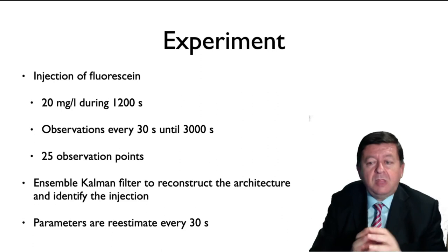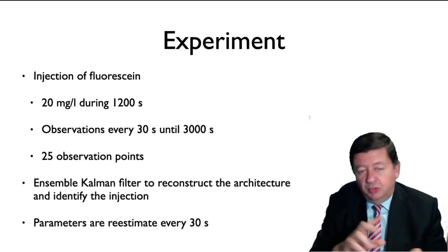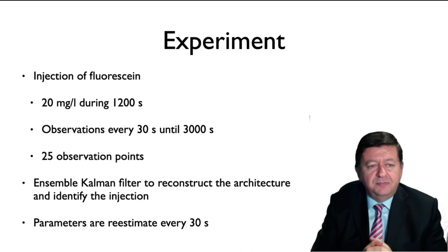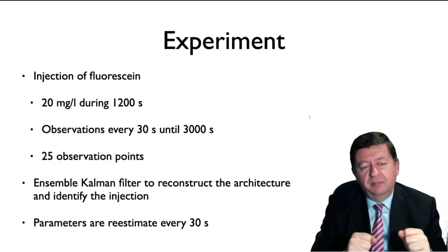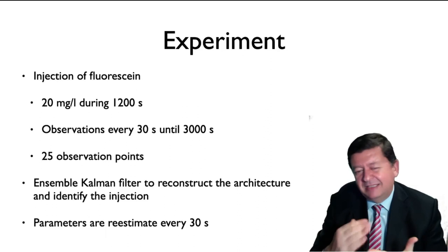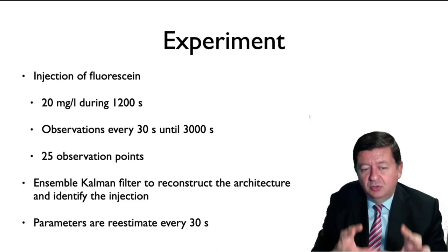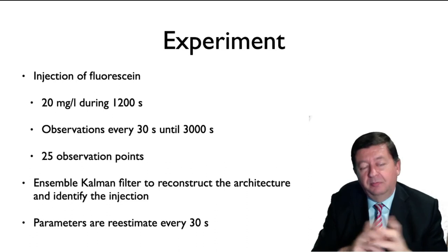The experiment involved injection of fluorescein at 20 milligrams per liter during 1,200 seconds. We took those 25 black dot observations every 30 seconds until 3,000 seconds, with 25 observation points. The inversion approach we used was the Ensemble Kalman filter, and I showed you the results it produces. The Ensemble Kalman filter is an assimilation approach: every 30 seconds we take a snapshot — values at the 25 locations of concentration — and with those values we estimate the parameters of the model, basically the heterogeneity of the conductivity and the source characteristics.